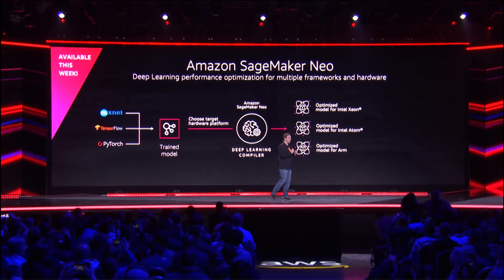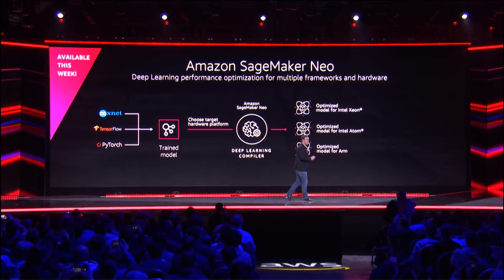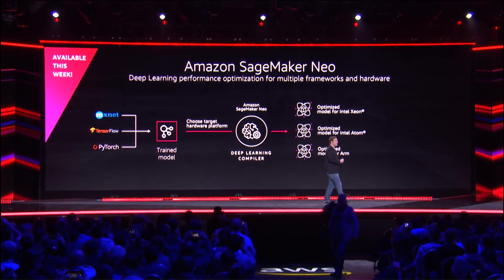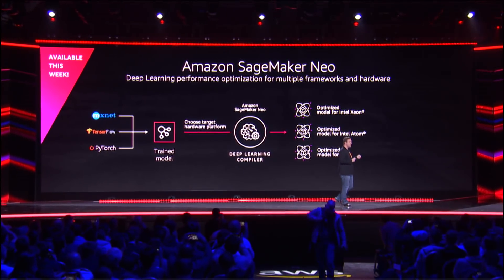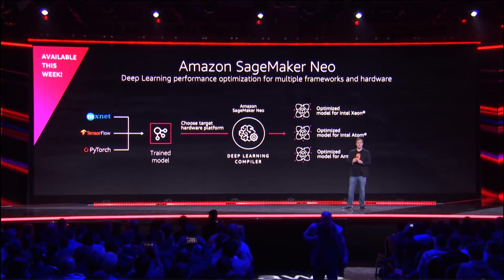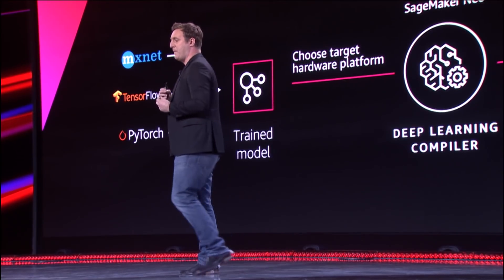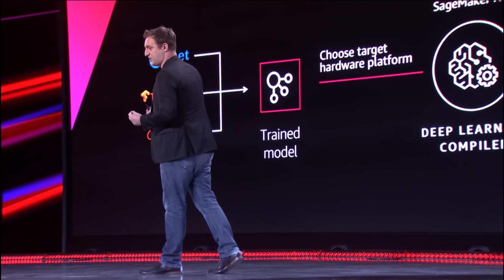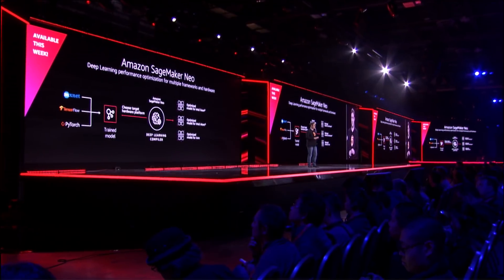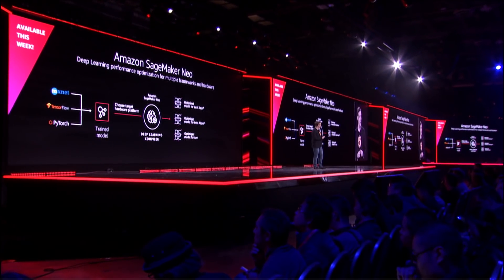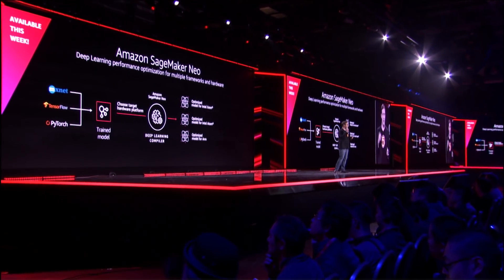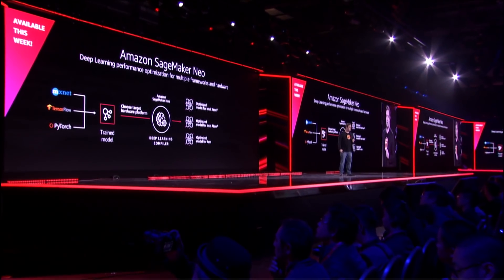The deep learning compiler will take advantage of everything that it knows — just as you would compile normal C++ code — to take advantage of all of the performance advantages of those individual platforms. And you can build, from a single trained model, multiple deployment targets.